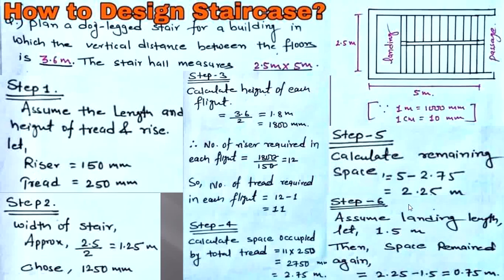Assume landing length equals 1.5 meters. The remaining space is then 2.25 minus 1.5, which equals 0.75 meters. This landing width can sometimes be taken as 1 meter or 1.5 meters based on conditions. The remaining space of 0.75 meters, that is 750 mm, can be utilized by increasing the tread dimension to 300 mm.